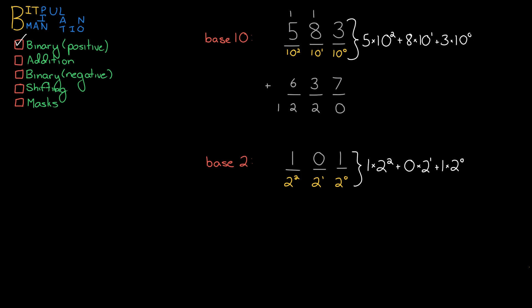So we can do that exact same thing in binary. In binary, our limit for each digit is just 2. So we're going to add this 1 and this 1, and that's going to hit our limit of 2. So we're going to record a 0 over here, carry the 1. Now we're going to add again a 1, a 0, and a 1. That's going to again hit our limit of 2, so we're going to record a 0 there, carry the 1 over, and now we're going to add a 1 and a 1. Again we're hitting this limit of 2, so we're going to record a 0 here and carry the 1 over, and we get 1, 0, 0, 0. That's how you do binary addition — it's very parallel to what you do in base 10.